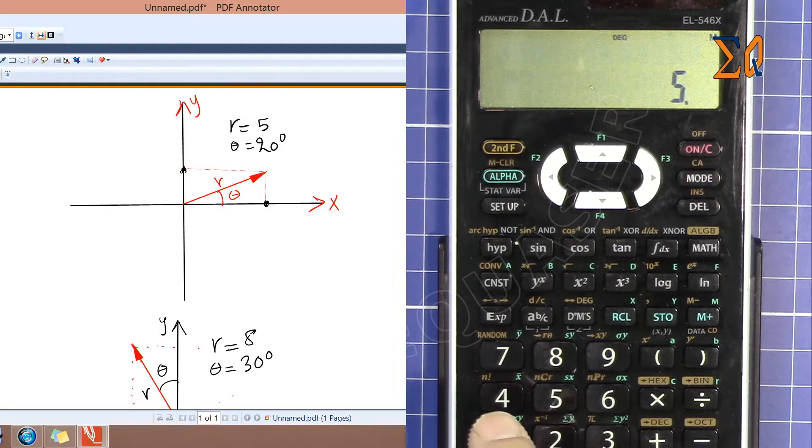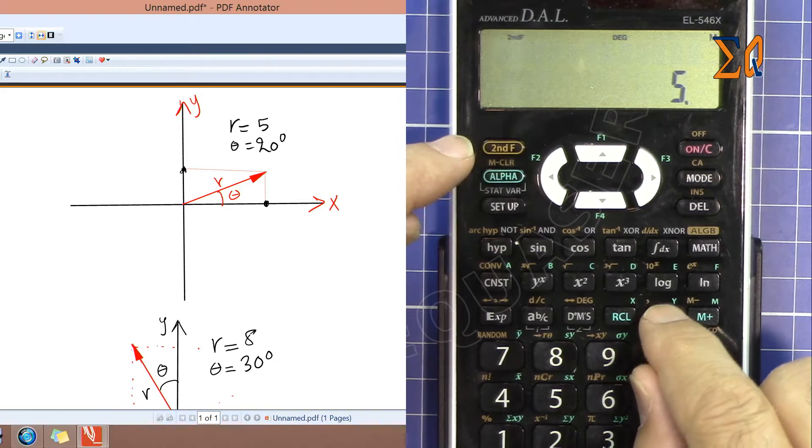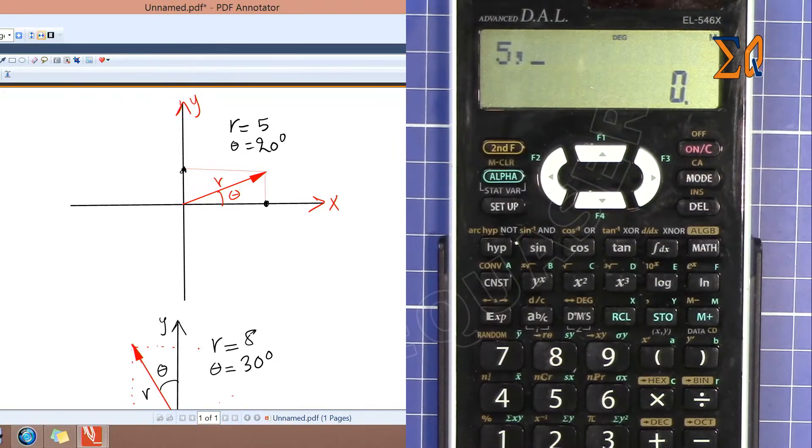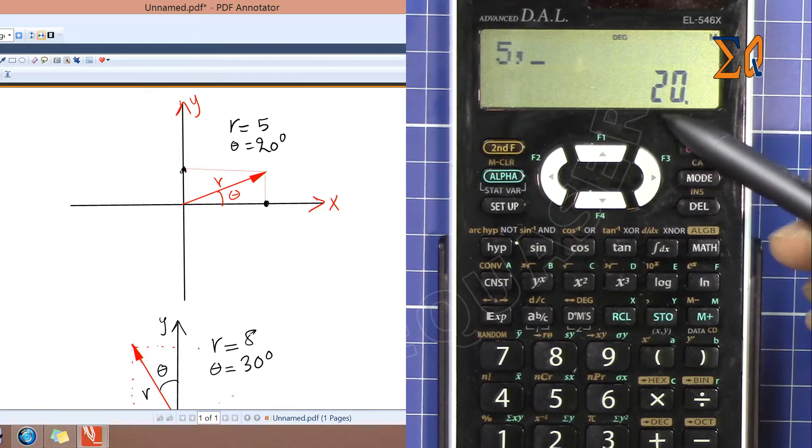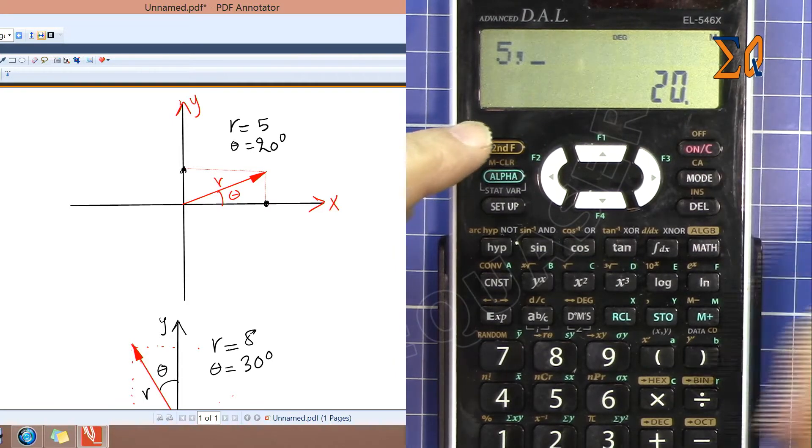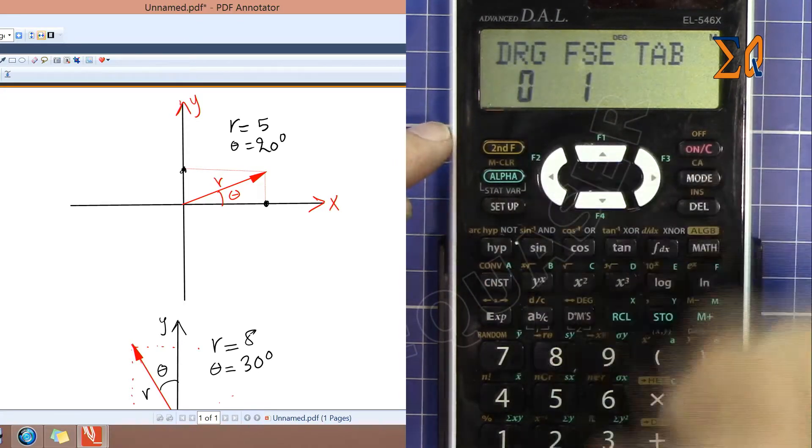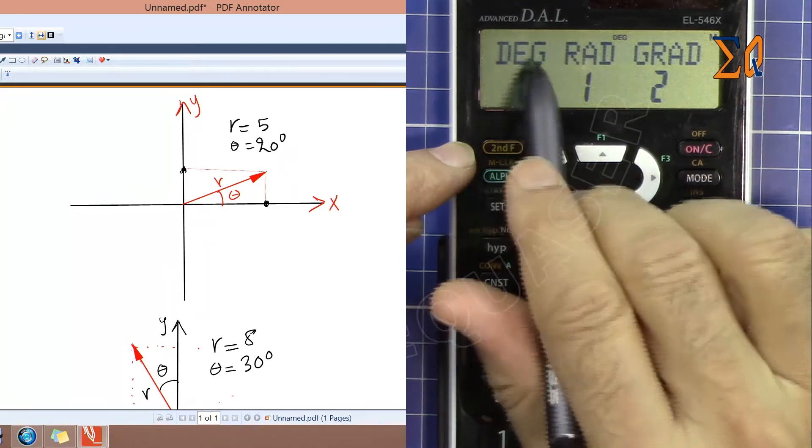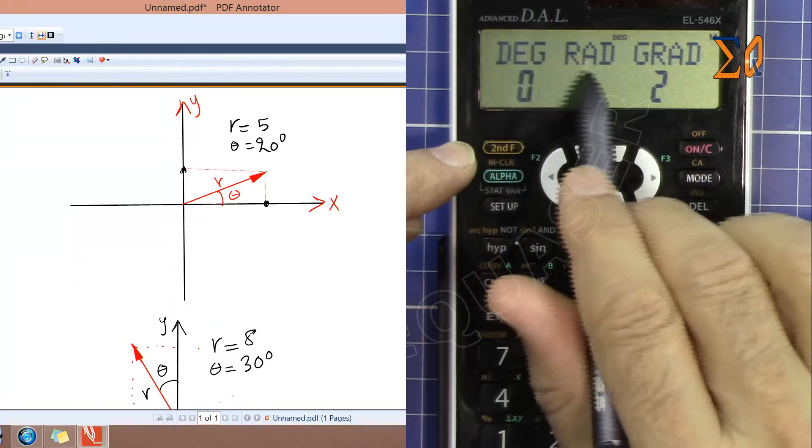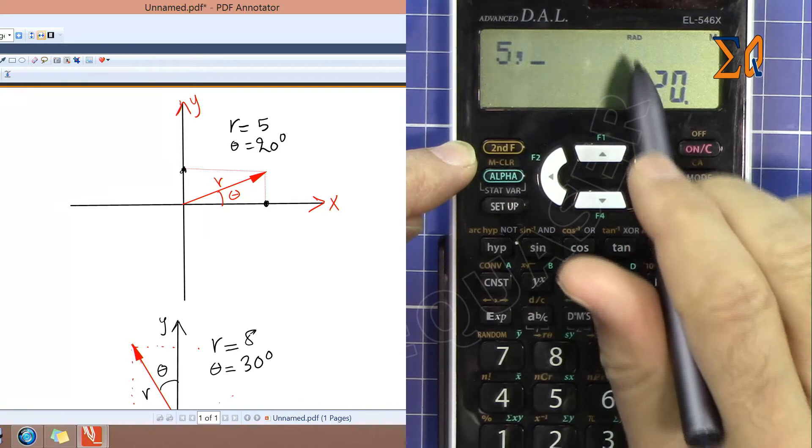Then theta. In rectangle always enter X and then Y. Then we enter comma—this comma is STO or store button with second function. So 5 and then 20. Now because this is degree, make sure your calculator is in degree mode. Press setup and 0 for degree, 1 for radian.